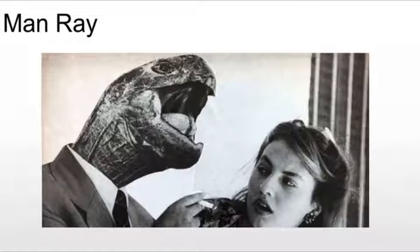He likes the dislocation of objects, creating a new awareness in his viewer of what should be there or what the function of an item should be. For example, here we are immediately reminded that that probably should not be a snapping turtle. But we immediately become conscious of it and what should be there simply by the juxtaposition — simply by removing the human head and putting a turtle's head there.